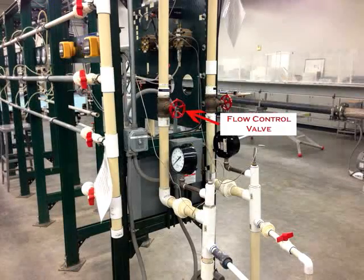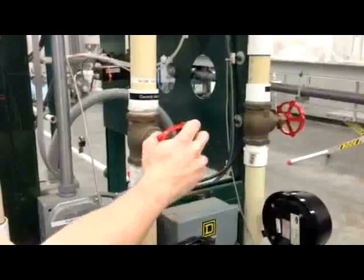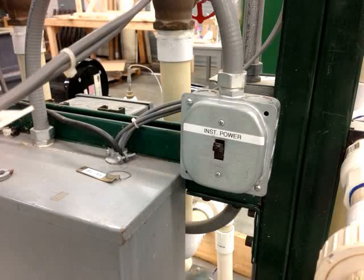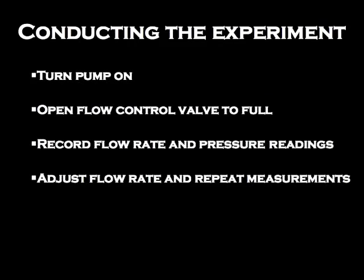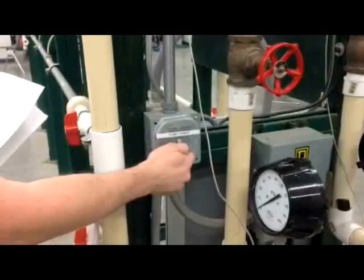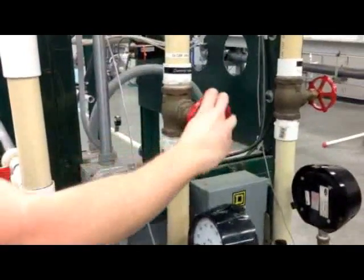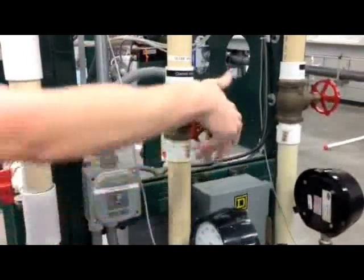Before the pump is turned on, slightly open the flow control valve. Before turning on the pump, make sure instrument power is on. Turn the pump on using the pump on/off switch, then open the flow control valve until specified in the lab manual.